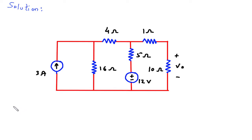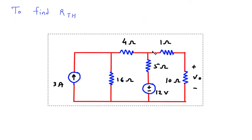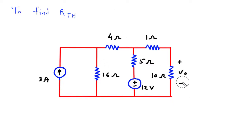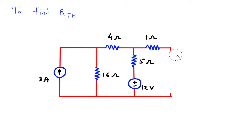To find RTH, we will keep this 10 ohm resistor aside. Let's say this is terminal A and this is terminal B. So this will be RTH.